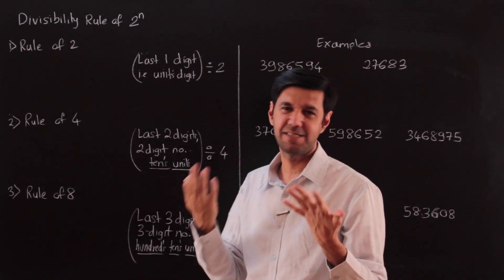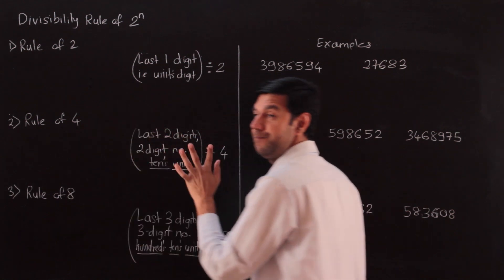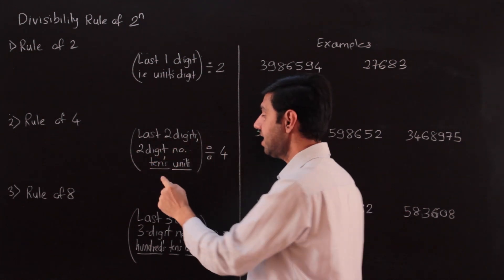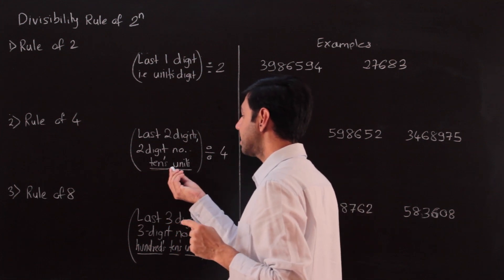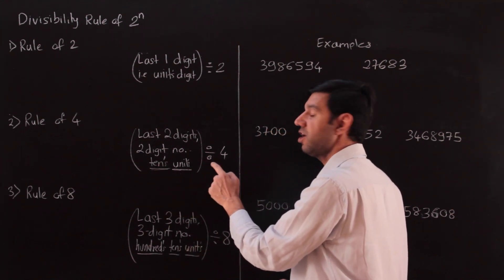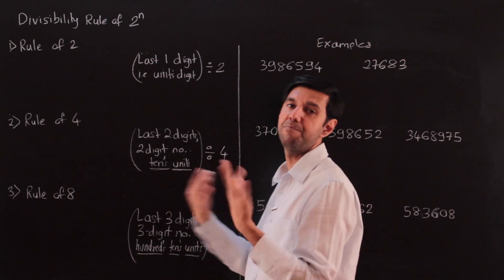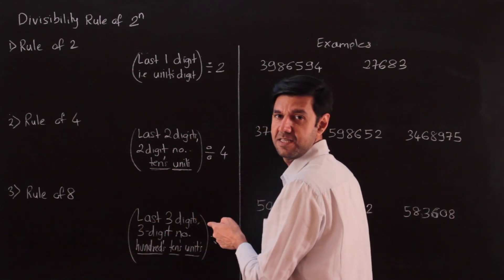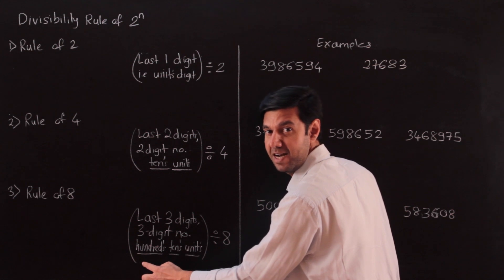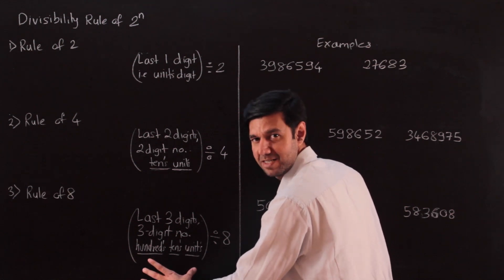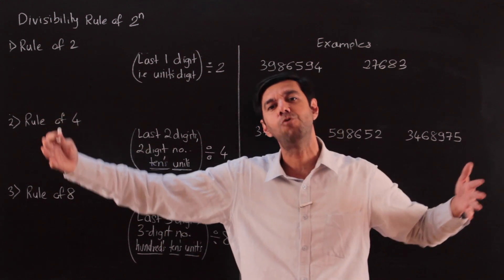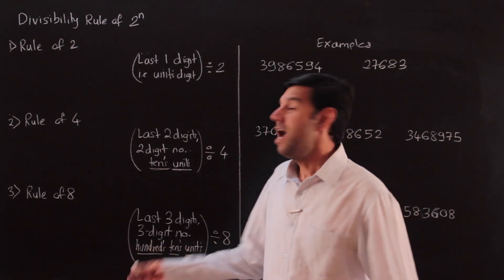Rule of 4 is very similar, but now we look at the last two digits. Take the tens and units digits placed side by side as a two-digit number and check the divisibility of that by 4. If it is divisible by 4, the number is divisible by 4. Rule of 8: last three digits — the rightmost three. That is a three-digit number made up of hundreds, tens, and units. If this three-digit number is divisible by 8, the entire number — however long it may be — is divisible by 8.